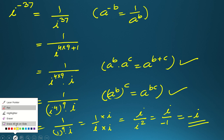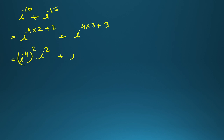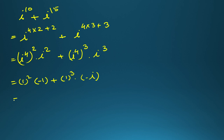You can also handle more than one term of i. For example, i to the power 10 plus i to the power 15. Write 10 as 4 times 2 plus 2, and 15 as 4 times 3 plus 3. This becomes (i to the power 4) to the power 2 times i squared, plus (i to the power 4) to the power 3 times i cubed, which equals 1 squared times minus 1, plus 1 cubed times minus i — giving minus 1 minus i.